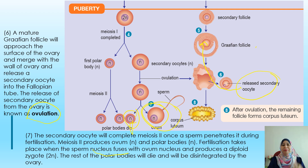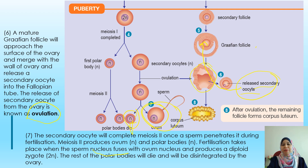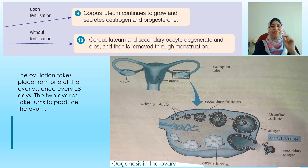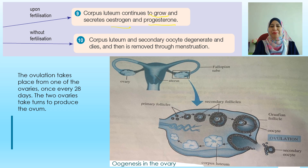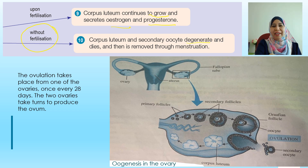The polar bodies will die and be disintegrated. As for the graafian follicle, once the secondary oocyte is released, the remaining follicle will form what we call the corpus luteum, which is yellowish in color. If fertilization happens, the corpus luteum will continue to grow and secrete estrogen and progesterone to support the pregnancy process. But if there is no fertilization, the corpus luteum and the secondary oocyte will degenerate and die, and be removed from the body through menstruation.